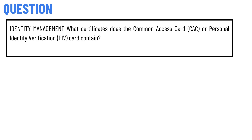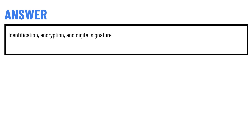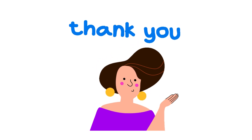Our today's question is about identity management: what certificates does the Common Access Card (CAC) or Personal Identity Verification (PIV) card contain? The correct answer to the question is: identification, encryption, and digital signature.